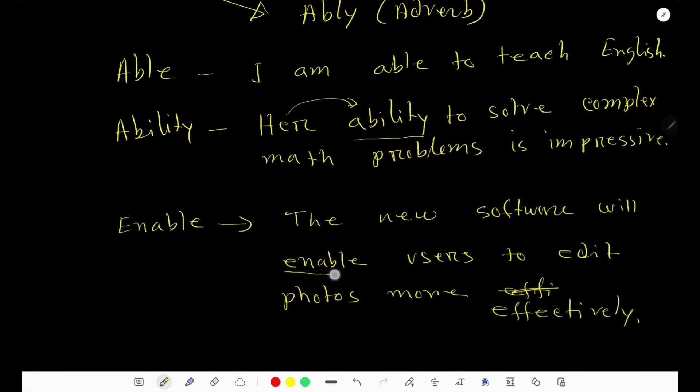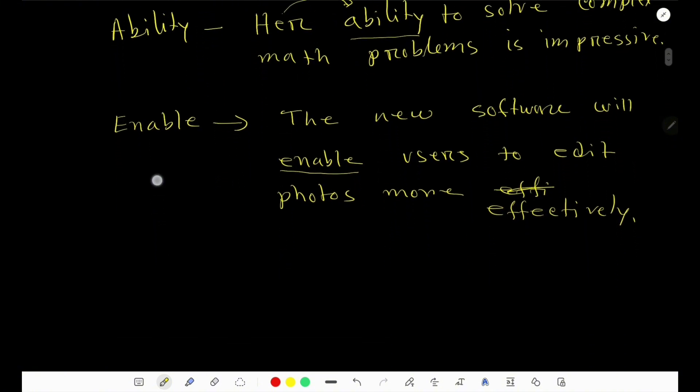Here, this word is a verb. Enable is a verb that means to give someone the means or opportunity to do something.